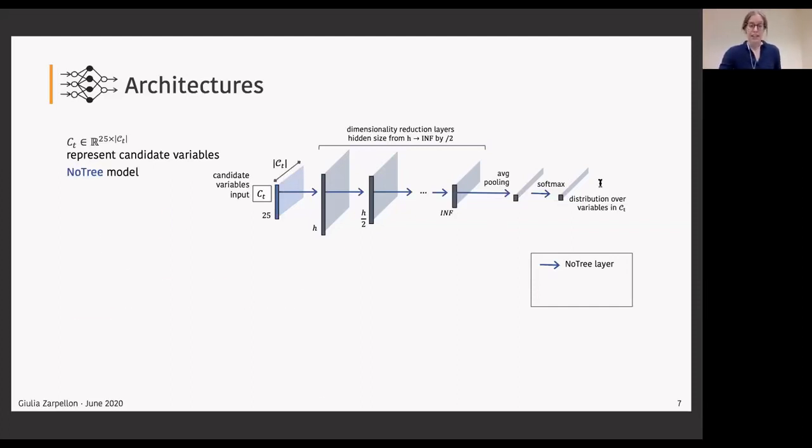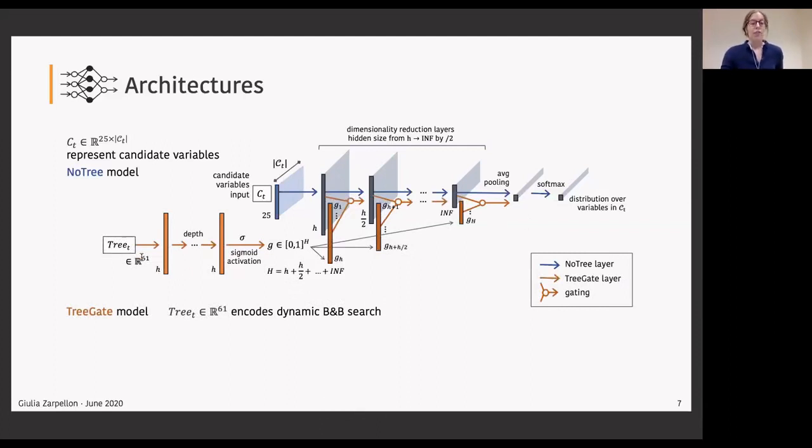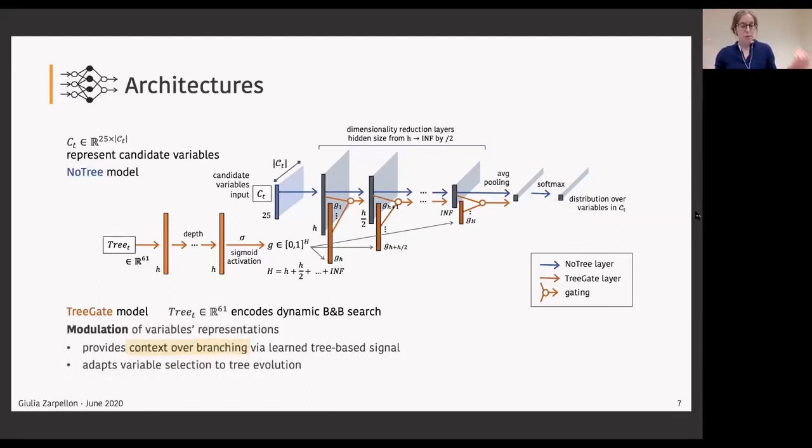The second model does use tree information. In this second model, our input tree 3T first enters some layers to output a vector g whose components are between zero and one. We use chunks of this g vector to modulate the intermediate parameterization of the candidate variables. This modulation operation, also called feature gating, represents the high level idea that a signal from the tree can be used to provide a richer context to the variable selection problem and that a branching policy should adapt based on the tree evolution itself.